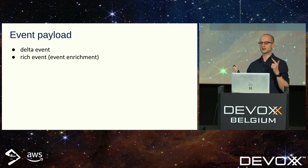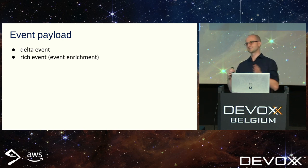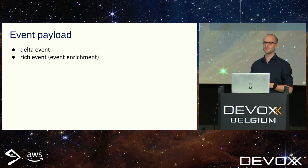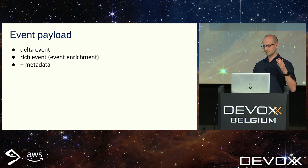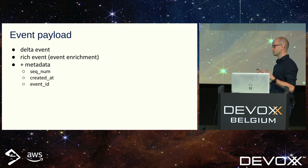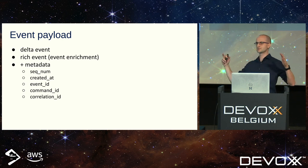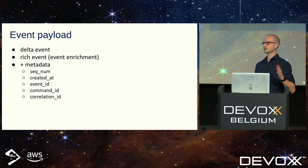The extreme version of event enrichment is putting the whole state into the event payload — I've done this once and don't recommend it, because then you need to support a pretty complex schema. Besides business data, most likely you'll put some technical metadata into the event payload: sequence number, creation timestamp, event ID for deduplication, command ID that was the source of the event, correlation ID if you want to track the whole business process across many microservices. My advice is to encapsulate all this information in a metadata object — it will be easier to handle later.